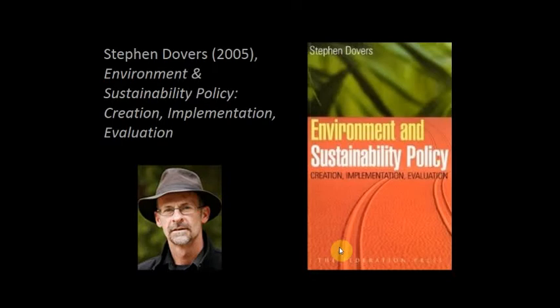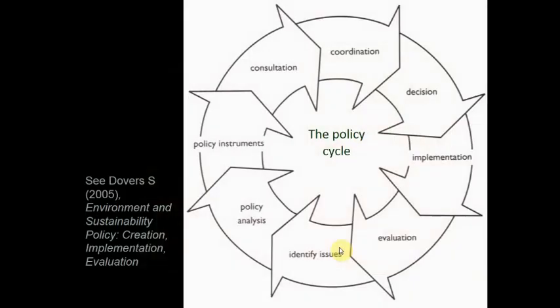Stephen Dovers' second edition, 'Environment and Sustainability Policy,' is a really good general reference. In policy analysis, they often talk about the policy cycle. You identify an issue like climate change, do policy analysis, identify different instruments you might use - laws, economic measures, or education - consult with industry and the community, coordinate your response within government, make a decision, implement it, and then evaluate it maybe a couple of years later. Then you go back to: have we solved it? That's the policy cycle.